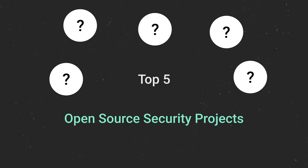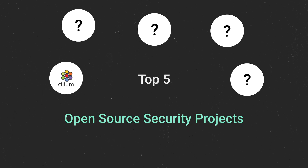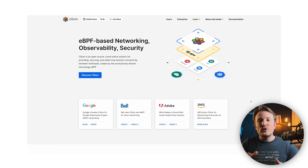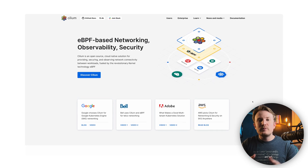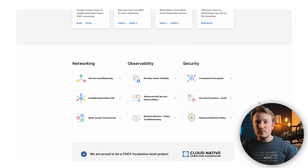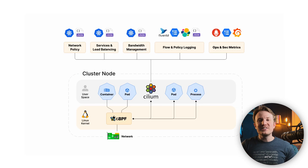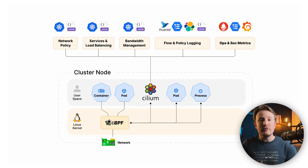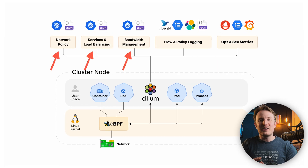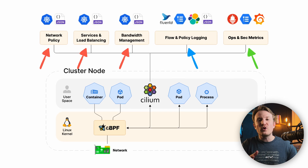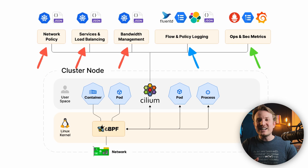Let's go ahead and dive in with the fifth most popular open source security tool, which is called Cilium. Cilium is a cloud security tool that provides secure network connectivity between app services deployed using containers like Docker or Kubernetes. Cilium consists of an agent that's running on all the cluster nodes and servers in your environment, and it provides networking, security, and observability to the workloads running on that node.